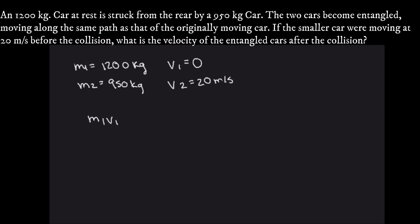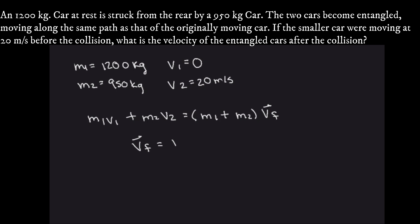We can use the perfectly inelastic collision equation: M1·V1 + M2·V2 equals the sum of masses (M1 + M2) times the final velocity. These are the initial momenta before the collision. The term we're looking for is the final velocity, so we move (M1 + M2) to the other side to solve for it.